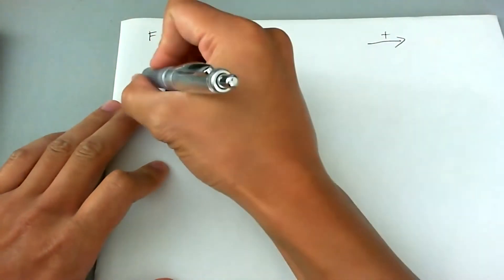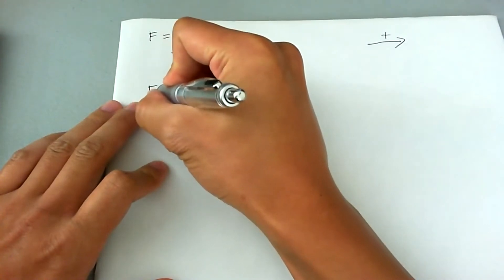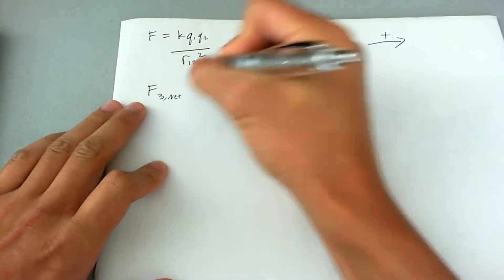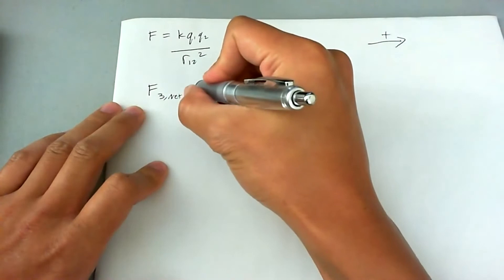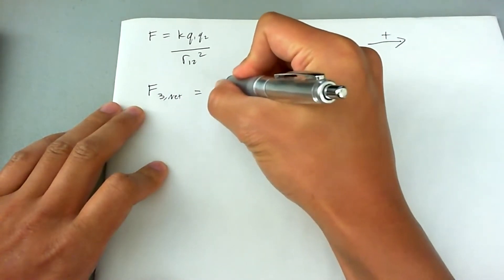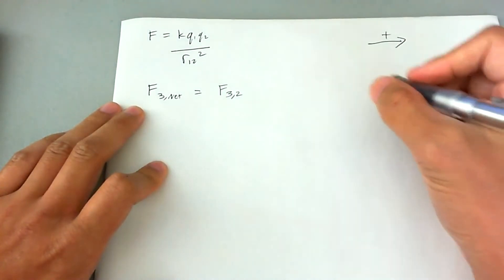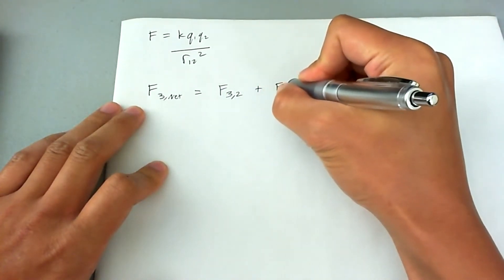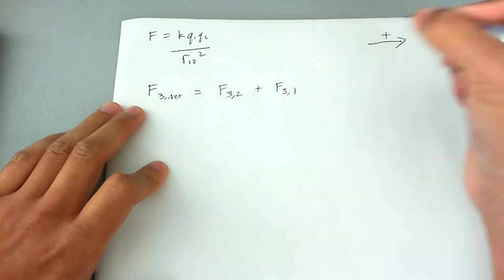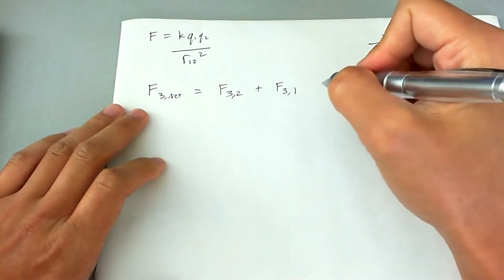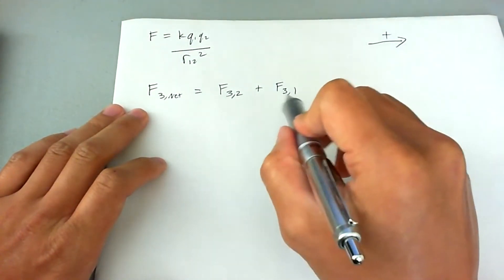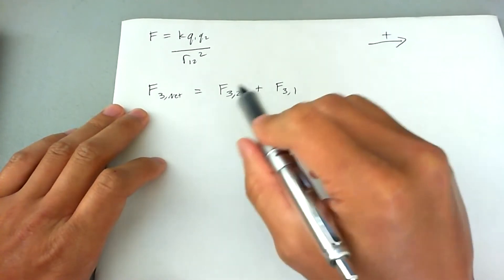So because of that, when I look at the overall net force acting on charge three, and that of course being the sum of the force of charge three because of charge two plus the force of charge three because of charge one, I also have to look at the direction because I know that one of them is going to be negative and one's going to be positive.